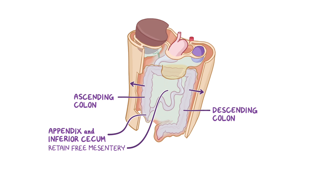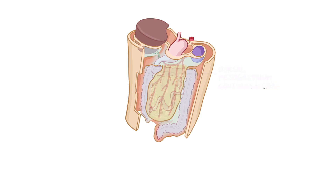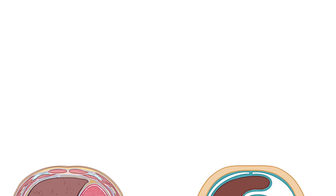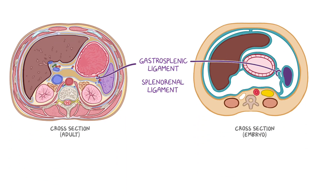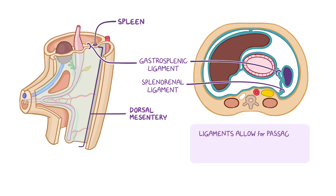The dorsal mesentery also remains attached to the stomach, known as the dorsal mesogastrium, which continues to grow as the stomach is twisting and bulges out, forming the four-layered apron known as the greater omentum. The dorsal mesentery of the jejunum and ileum is the mesentery proper. Finally, the dorsal mesentery also gives rise to the gastrosplenic and splenorenal ligaments, which arise similarly to the falciform ligament and the lesser omentum. The spleen develops within the dorsal mesentery, posterior to the primitive gut tube, creating the gastrosplenic ligament between the spleen and the stomach and the splenorenal ligament between the spleen and the left kidney. These ligaments allow for the passage of blood vessels, nerves, and lymphatics to and from these organs.